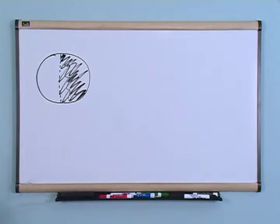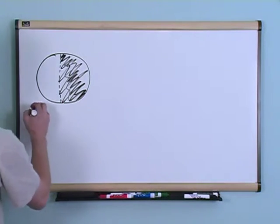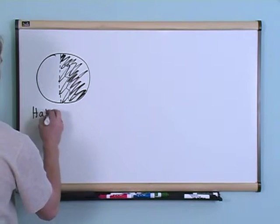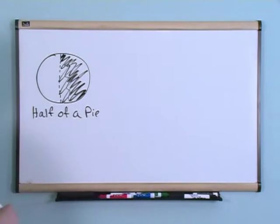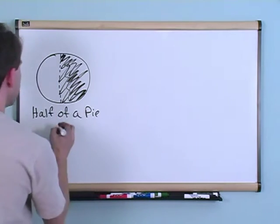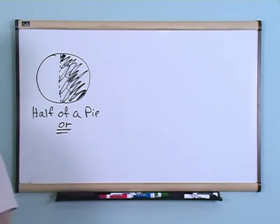Now how do you write that down? Well you can say that this is half of a pie. Half of a pie, and that's absolutely true. But in math you want to write this stuff down in terms of a number, right? So you can also write it down like this.